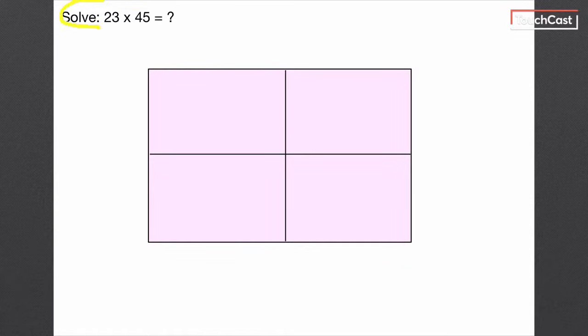So as you can see, up here I have an equation that is two digits, 23, times two digits, which is 45. And we're going to use this lovely little area model right here to find our final product.